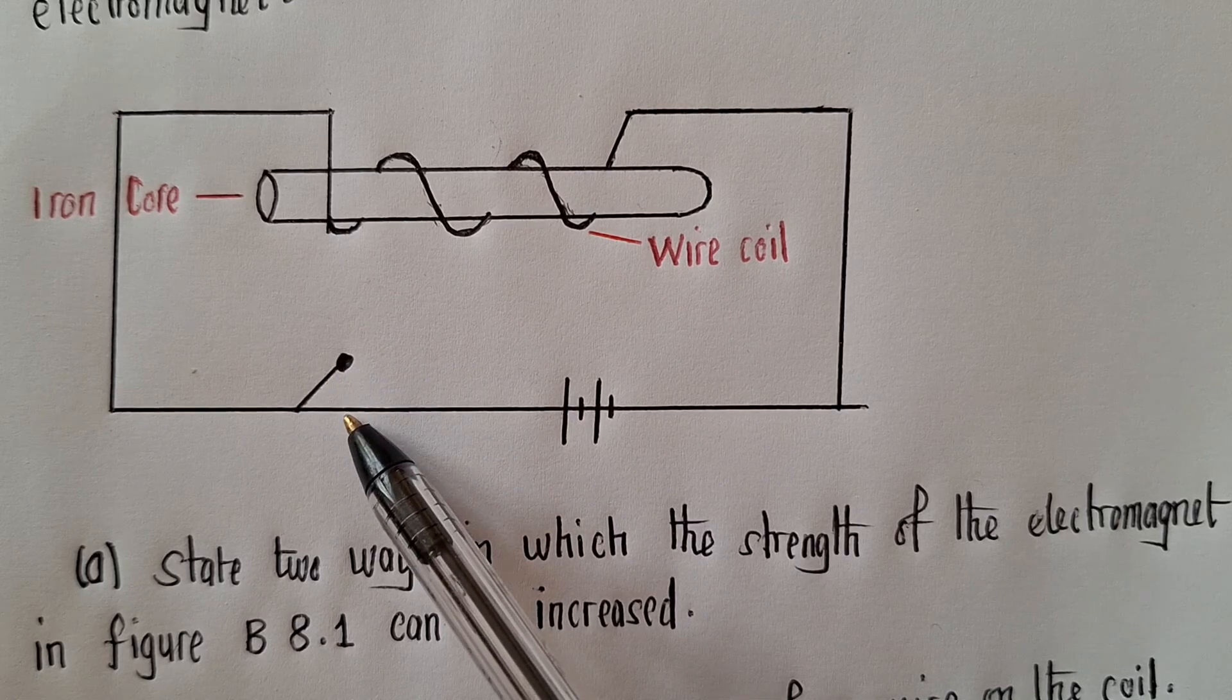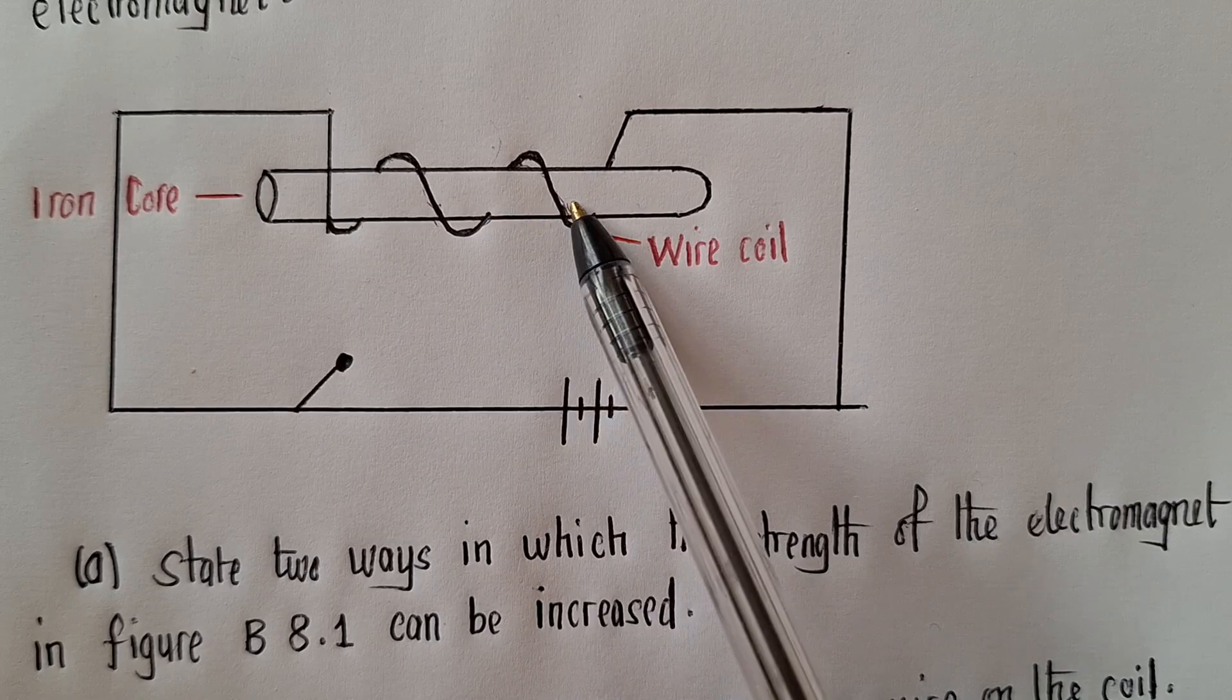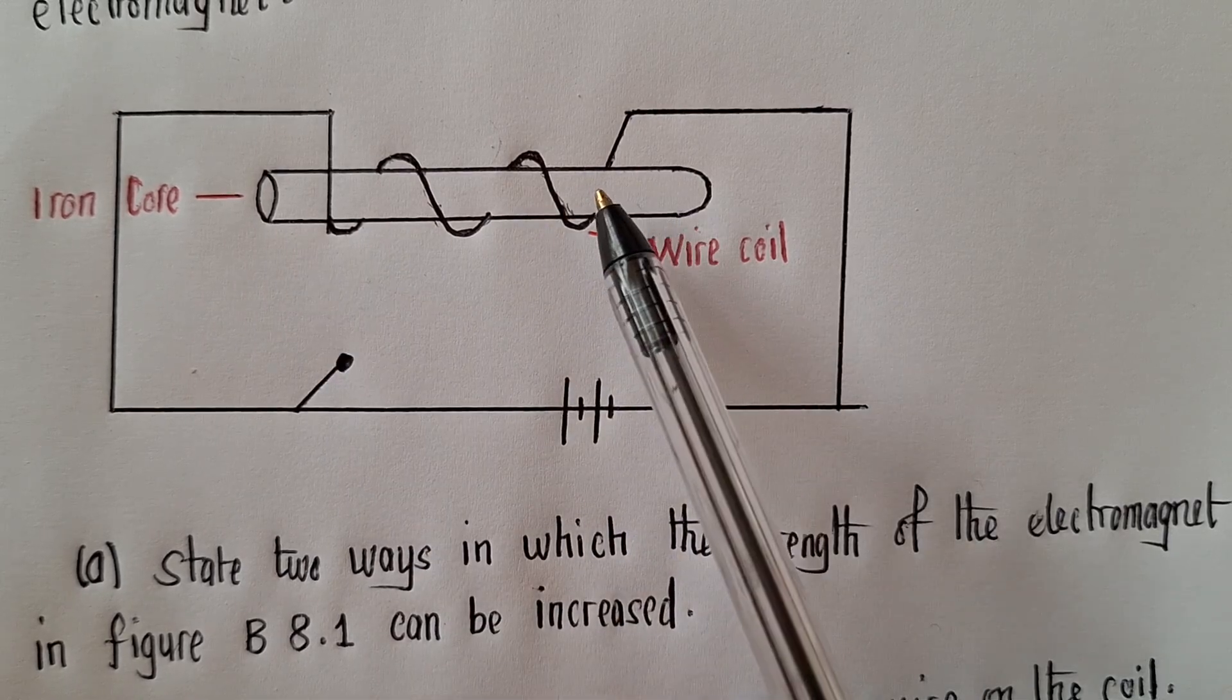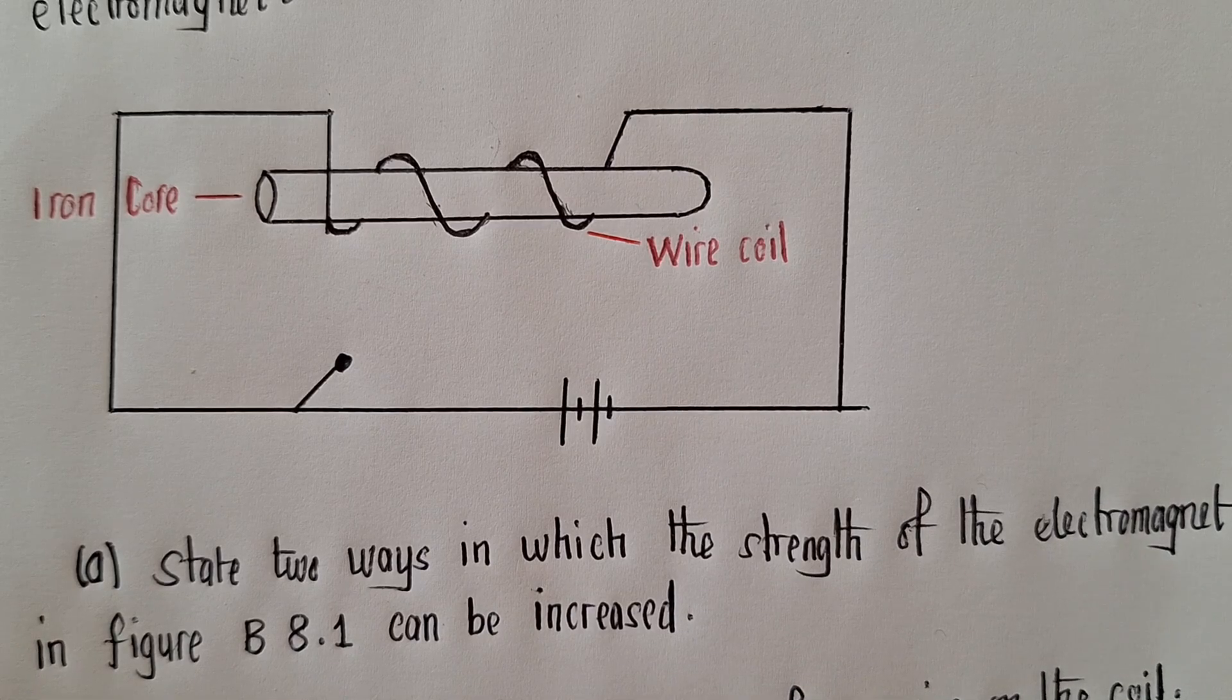Because we want when we switch on, the magnetism is on or it's there. And when we switch off, the magnetism disappears. So that's how it is. That's why we use iron.